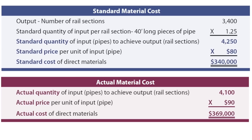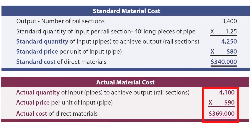Let's operationalize these formulas with an example for Blue Rail manufacturing. Blue Rail manufactures a fence or railing section that requires steel pipe to produce. For the period in question, Blue Rail produced 3,400 units of output. Each unit should have required one and a quarter pieces of material — in other words, 4,250 pieces of pipe — and each piece had a standard price of $80. So standard cost was 4,250 pieces at $80, totaling $340,000. Actually, they used 4,100 pieces but paid $90 per piece, so actual cost was $369,000.